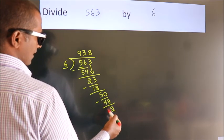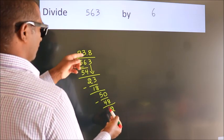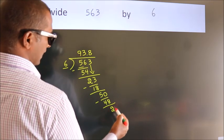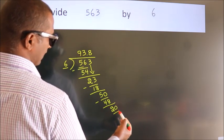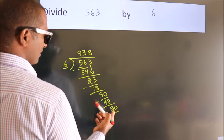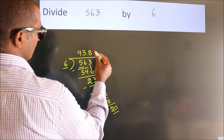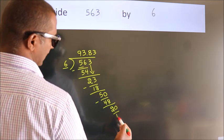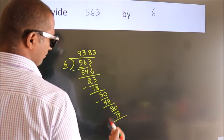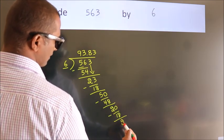After this, we already have the decimal, so directly take 0. So 20. A number close to 20 in the sixth table is 6 threes 18. Now we subtract. We get 2.